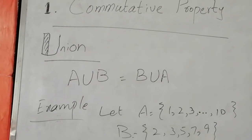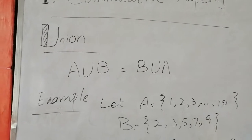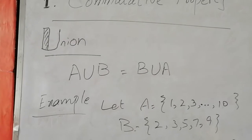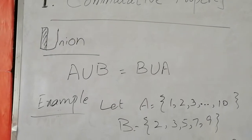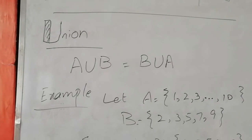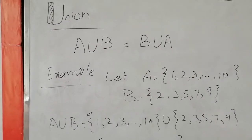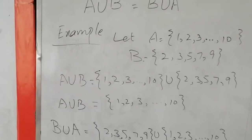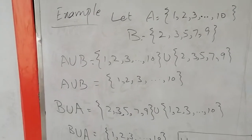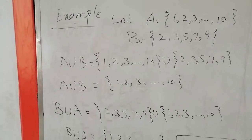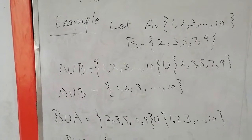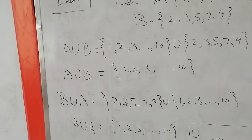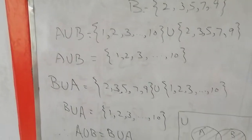For example, A is the first ten natural numbers and B is the first five prime numbers. When we take A union B, we get the first ten natural numbers. When we take B union A, we again get the first ten natural numbers — the result is the same.